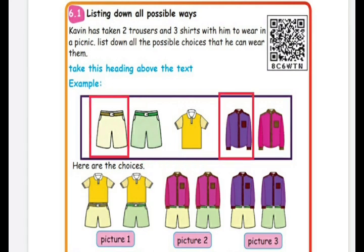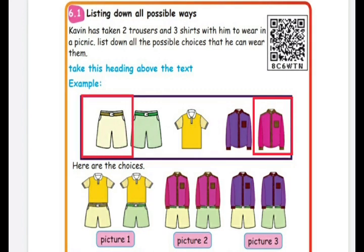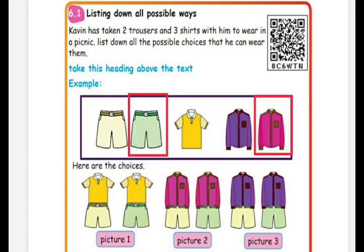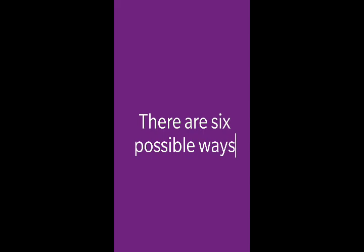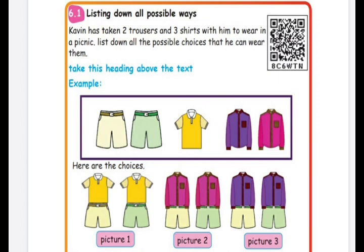Now we can change the shirt to purple. For the purple shirt, he can wear sandal shorts or green shorts. Next, changing to the pink shirt, he can either wear sandal shorts or green shorts. So in total we have found six possible ways: yellow shirt with sandal shorts, yellow shirt with green shorts, purple shirt with sandal shorts, purple shirt with green shorts, pink shirt with sandal shorts, and pink shirt with green shorts.